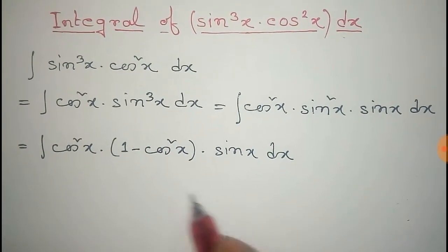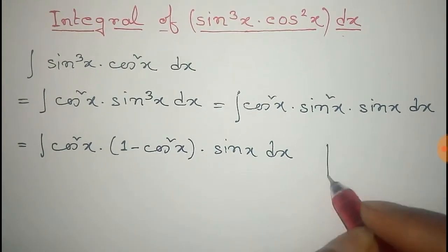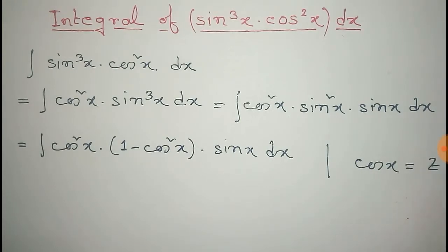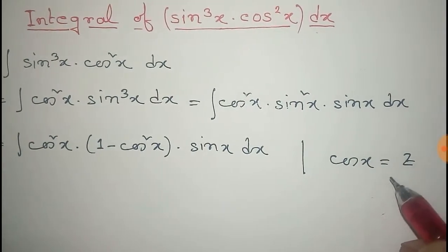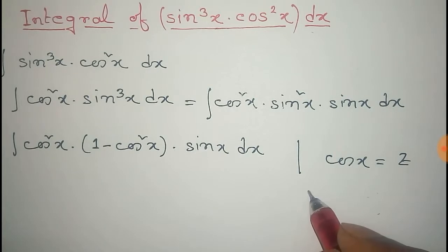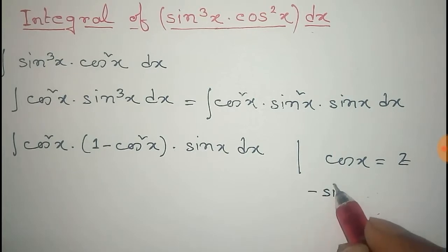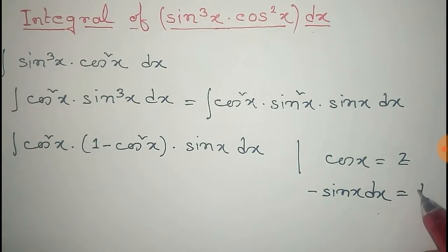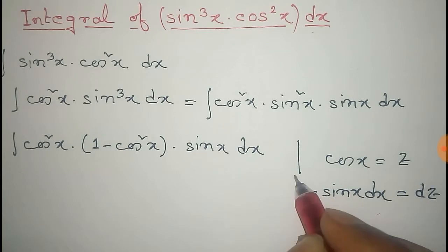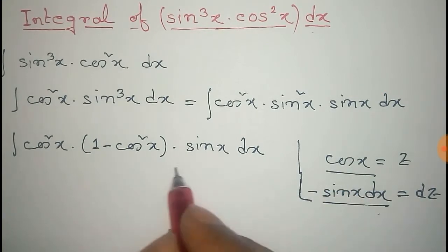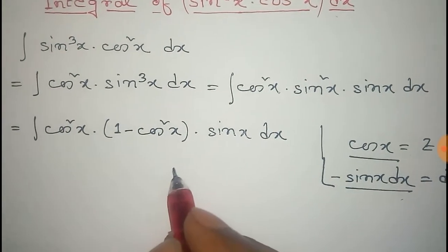Now we consider that cosine x equals z. Differentiating on both sides we get minus sine x dx equals dz. Now we substitute the values of cosine x and this differential.